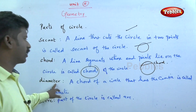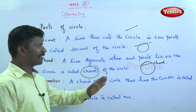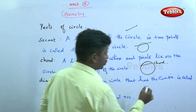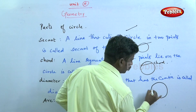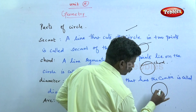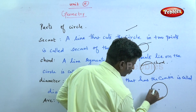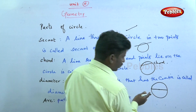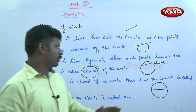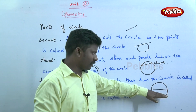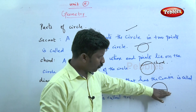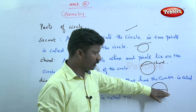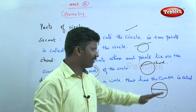Then, diameter. A chord of a circle that passes through the center is called a diameter. The chord that passes through the exact center point is called the diameter. This chord is called diameter.